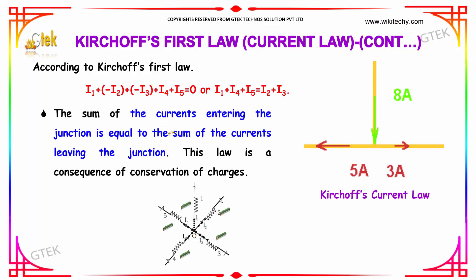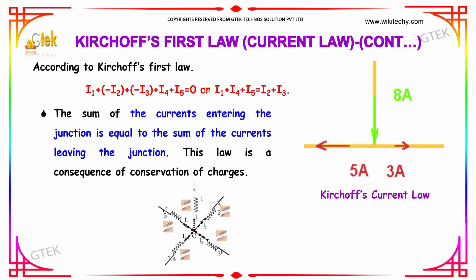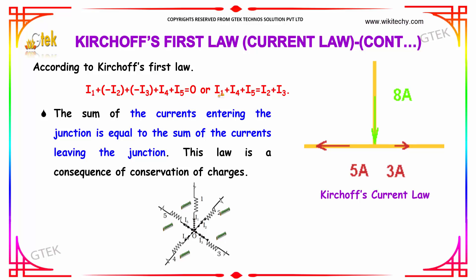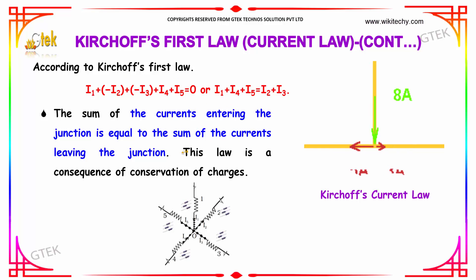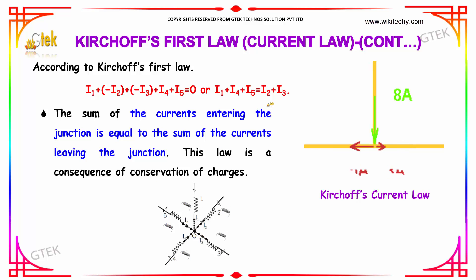Applying Kirchhoff's first law, we get: I1 − I2 − I3 + I4 + I5 = 0. Rearranging, this gives I1 + I4 + I5 = I2 + I3. So Kirchhoff's first law can be redefined as: the sum of currents passing towards the junction equals the sum of currents passing away from the junction.